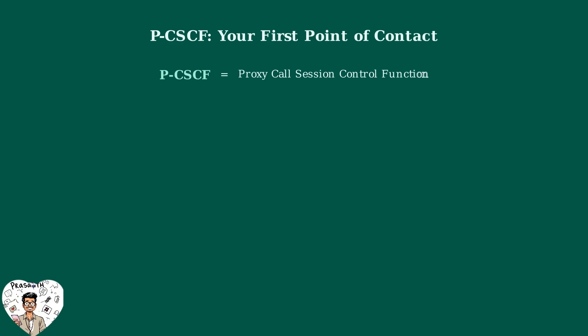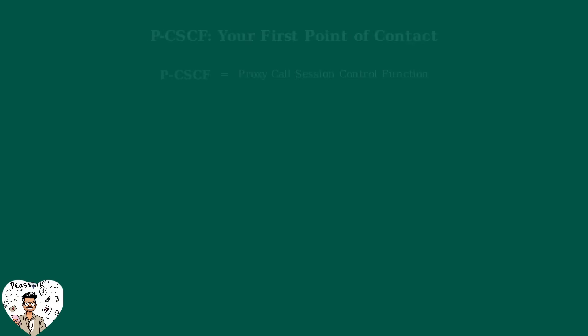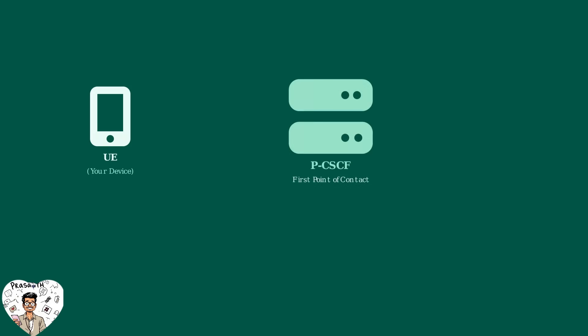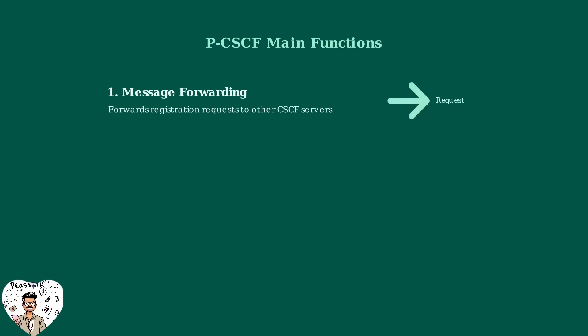Let's explore the PCSCF, which stands for Proxy Call Session Control Function — a crucial component in the IMS network architecture. The PCSCF is the very first server your device encounters when trying to connect to the IMS network. Think of it like a friendly receptionist at the front desk of a building. When your device wants to register with the IMS network, it sends its first message directly to the PCSCF. The PCSCF has four main functions. First, it forwards your registration requests to the appropriate servers deeper in the IMS network.